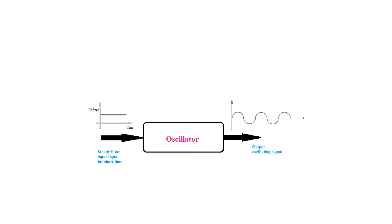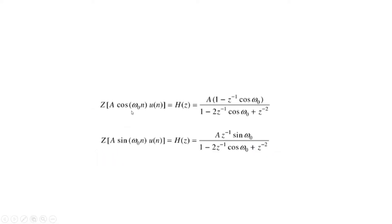Here I am discussing digital signal processing, so we should think about discrete signals instead of continuous waveforms. To generate a system that gives sine or cosine output, recall from Z-transform: the Z-transform of a·cos(ω₀n)·u(n) is a·(1 − z⁻¹·cos(ω₀)) divided by (1 − 2z⁻¹·cos(ω₀) + z⁻²), and the Z-transform of a·sin(ω₀n)·u(n) is a·z⁻¹·sin(ω₀) divided by the same denominator. The denominator is the same in both cases; only the numerator differs.